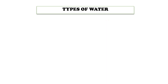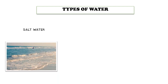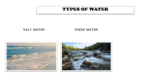Do you remember the importance of water? All living things need water to live. Let's have a look at the three types of water. We can find salt water in oceans and seas. We can find fresh water in rivers and lakes.